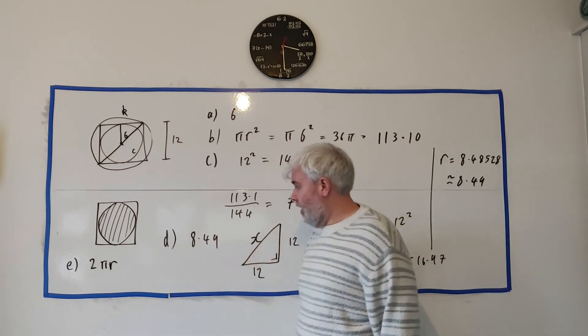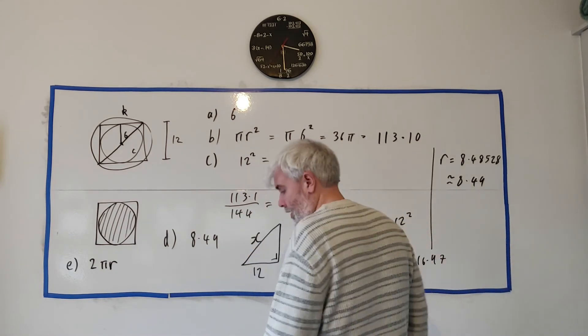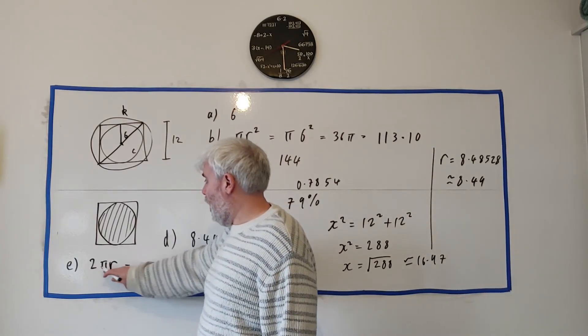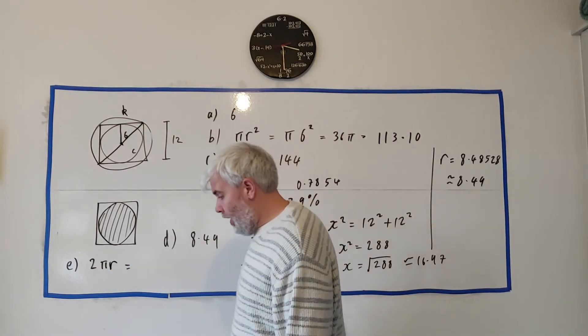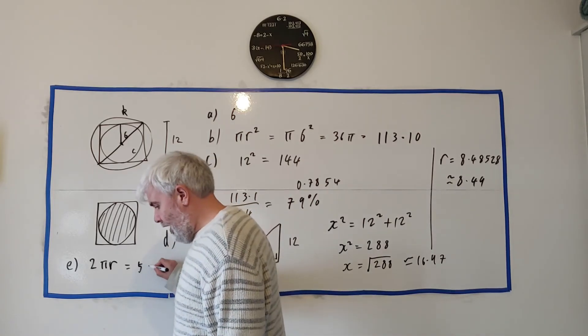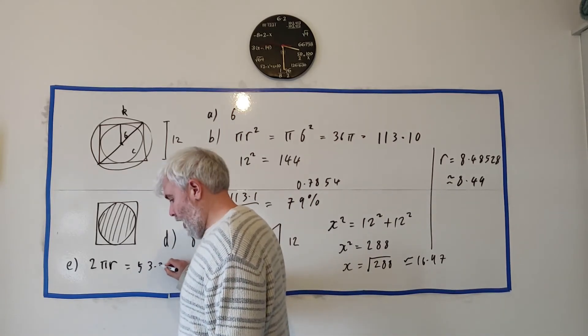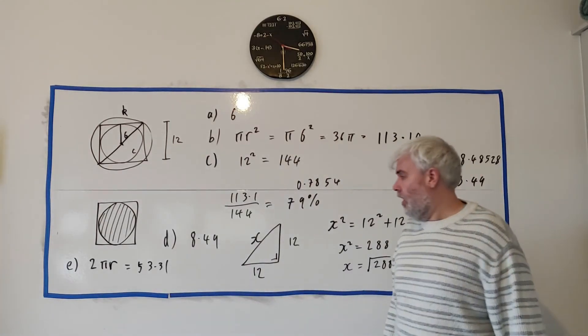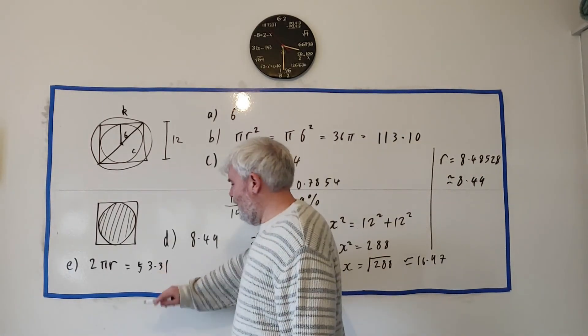So yeah we just put that in calculator, 2 multiplied by pi multiplied by 8.49 and you get 53.31 is the circumference of the circle.